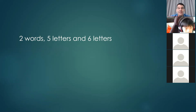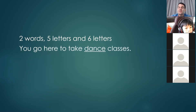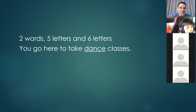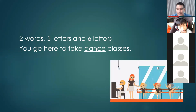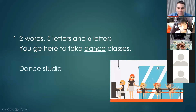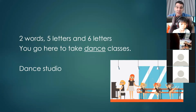The next one is two words — five letters and six letters. You go here to take dance classes. The first word is 'dance.' A good guess is 'dance school,' but usually we say 'dance studio.' A studio is a place where you go to do artistic things — a movie studio to make a movie, a music studio to make music, and a dance studio to dance. Studio is spelled S-T-U-D-I-O.